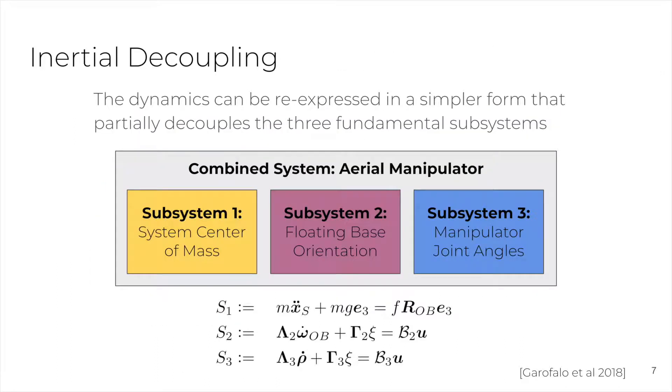The resulting equations of motion are highly complex and coupled. However, using the method of Garofalo et al. 2018, we can re-express the dynamics in a simpler form as equations for each of three fundamental subsystems, namely the center of mass of the entire system, the floating base orientation, and the manipulator joints. These equations have sparser interdependencies, dramatically simplifying the analysis.